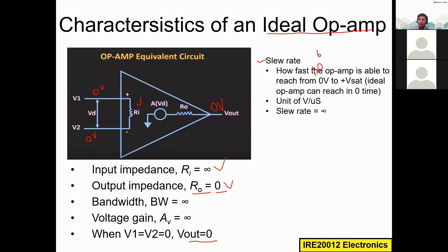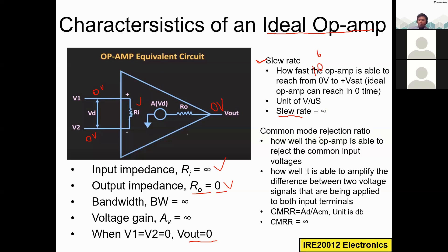For an ideal operational amplifier, it can reach V_sat within no time — zero time — so the slew rate for the ideal op-amp is infinity. The unit we measure slew rate in is volts per microsecond. Slew rate is an important characteristic of the operational amplifier.